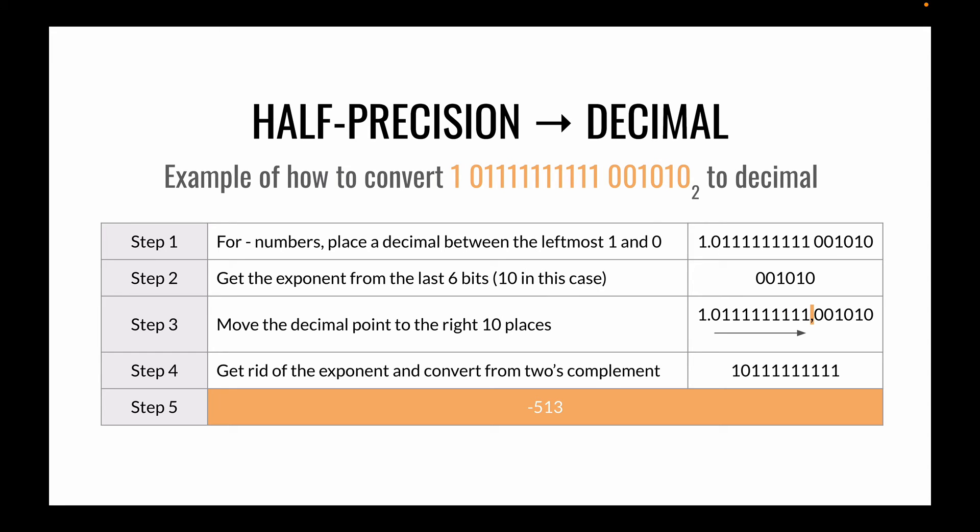Here's a tricky one where we have a negative floating point number and we need to convert it back to decimal. So in this case we won't do anything different. We'll still move the decimal place over based on the number of moves and the exponent. So we move that over here. And once we've done that then we can restore the original number and we'll get the number 513. And then we need to remember to add the negative in our answer.